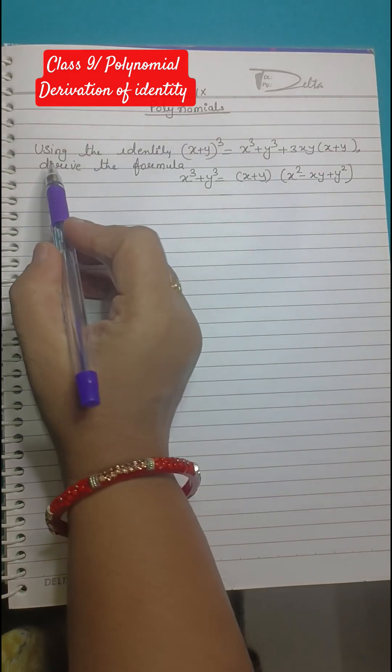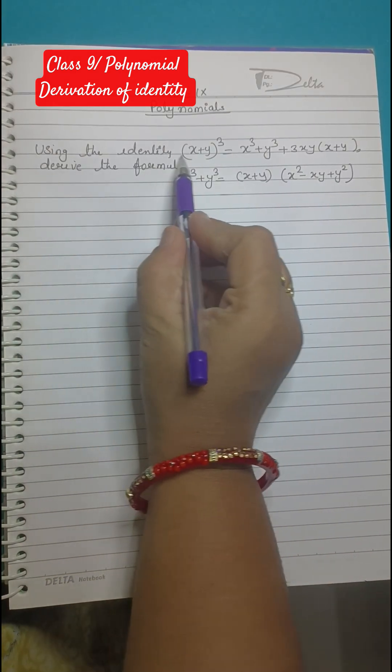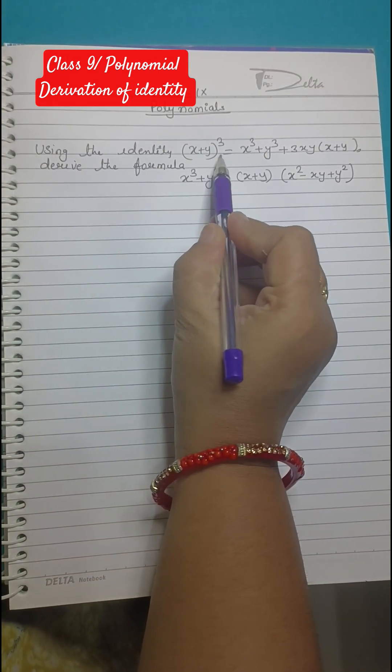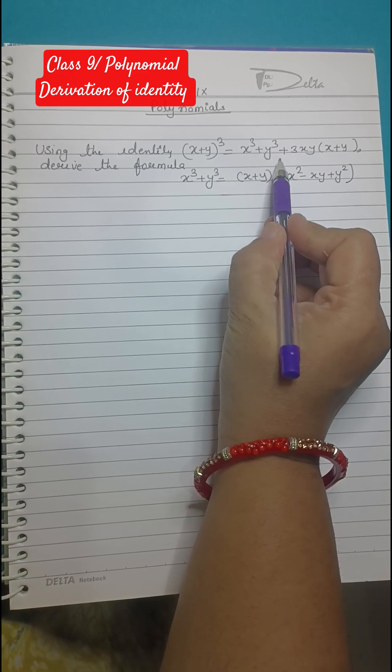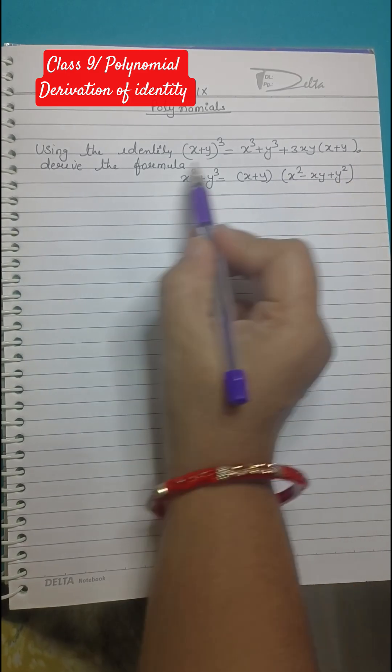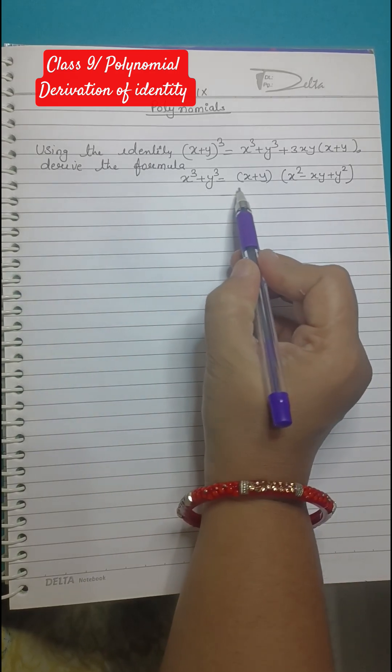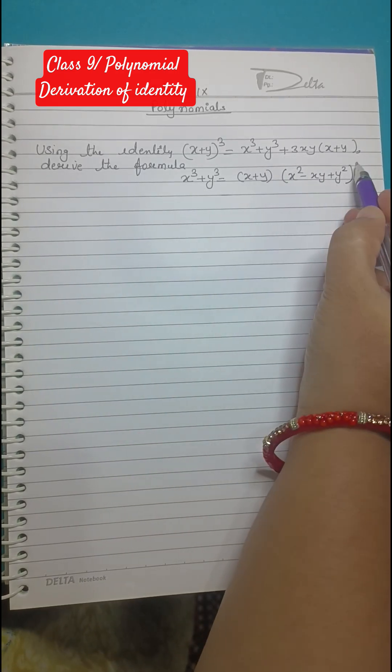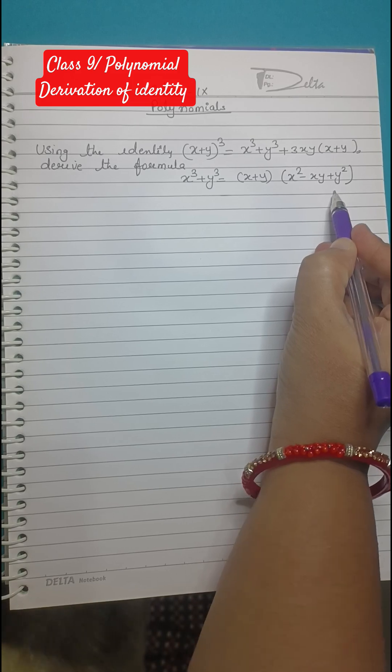So the question says using the identity (x+y)³ = x³ + y³ + 3xy(x+y), derive the formula. This is given to us, we need to find out this, very easy.